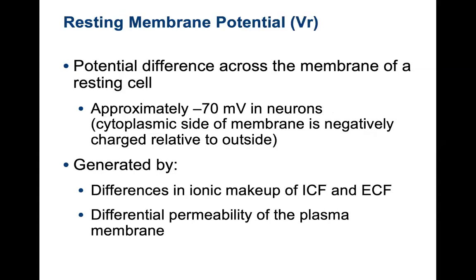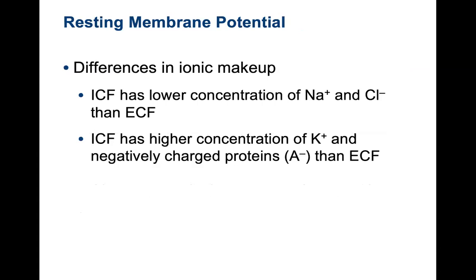The potential difference across the membrane of a resting cell is referred to as resting membrane potential — approximately negative 70 millivolts. The cytoplasmic side of the membrane is negatively charged relative to the outside. This difference is generated by ionic makeups of intracellular and extracellular fluids, meaning differences in ions found inside versus outside, as well as the differential permeability of the plasma membrane. Intracellular fluid has a lower concentration of sodium and chloride than extracellular fluid, and a higher concentration of potassium and negatively charged proteins. On the inside of the cell, you have a lot of proteins present, which helps contribute to the negativity inside.